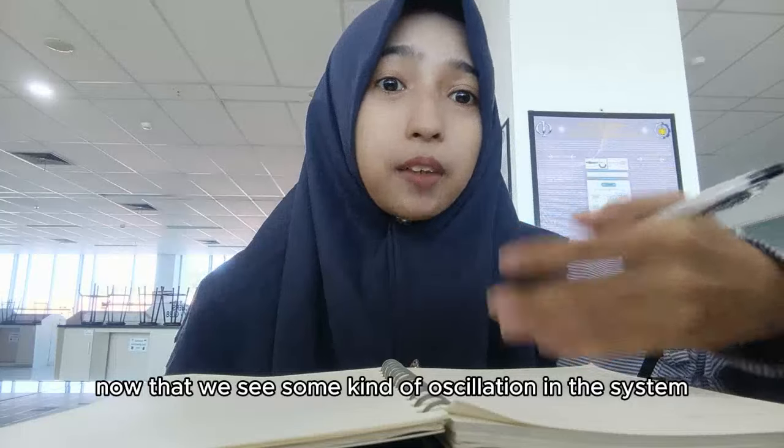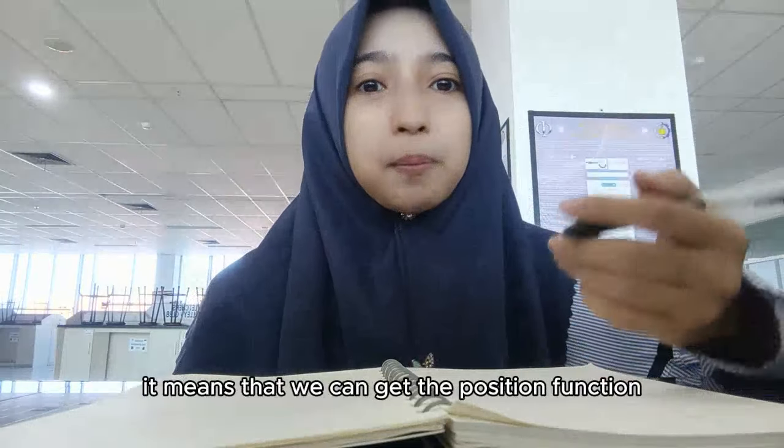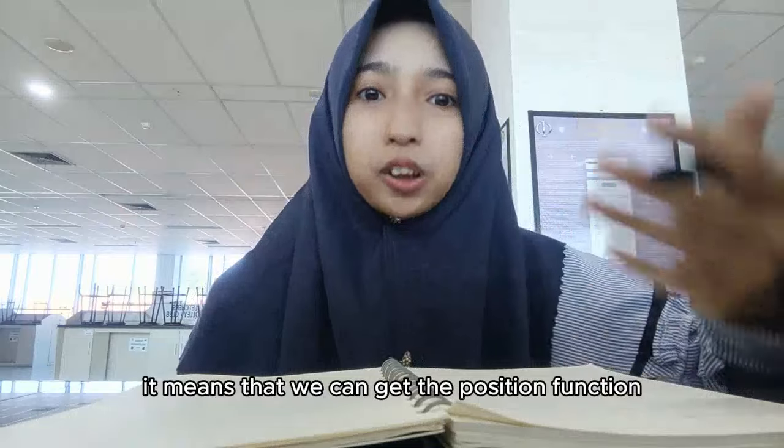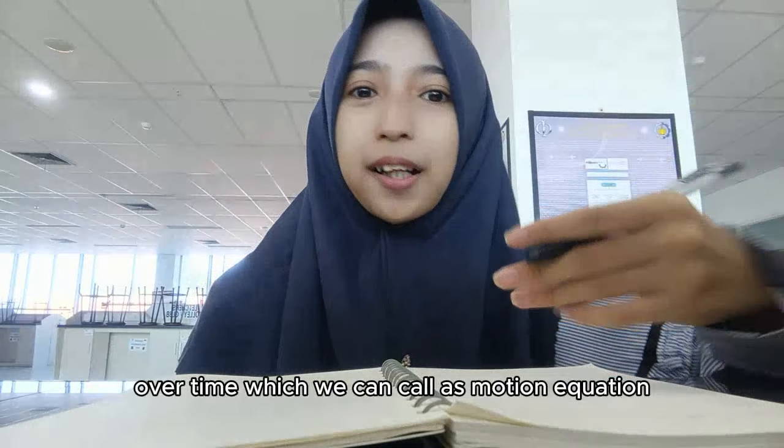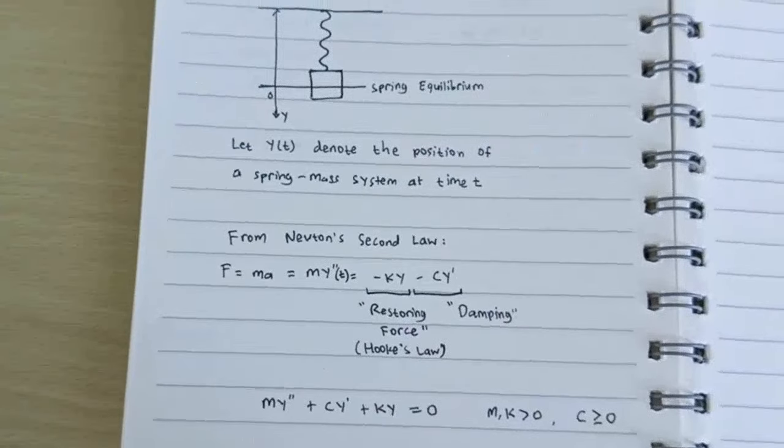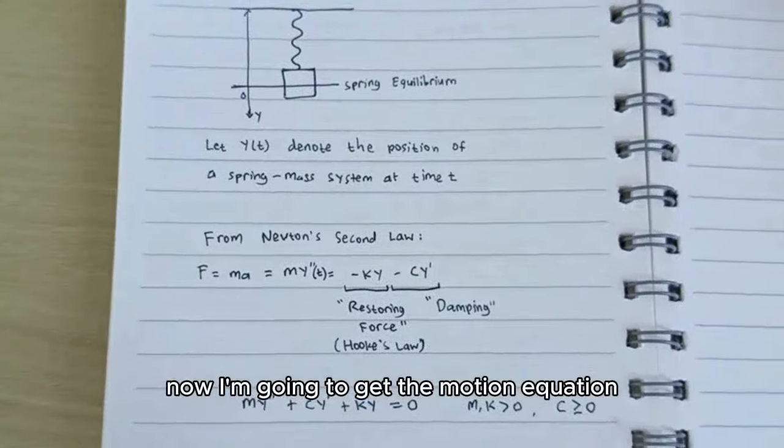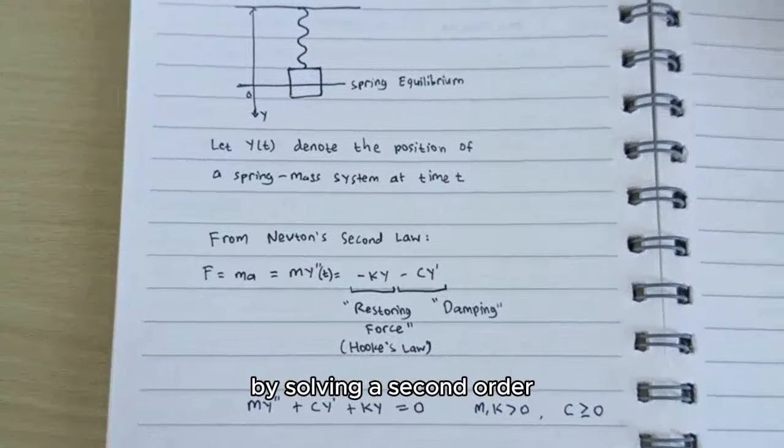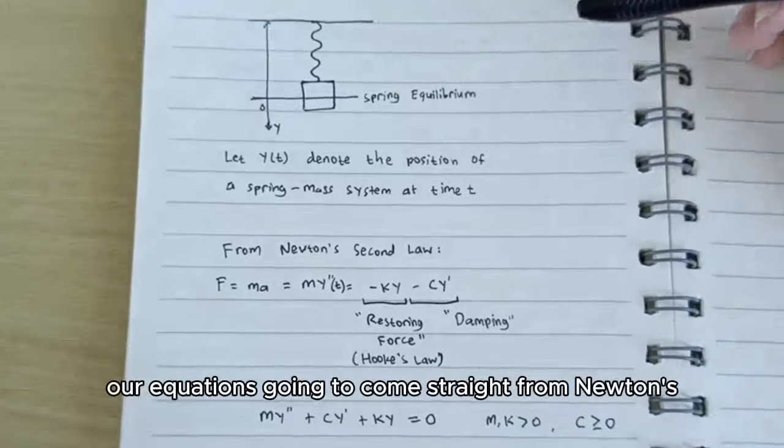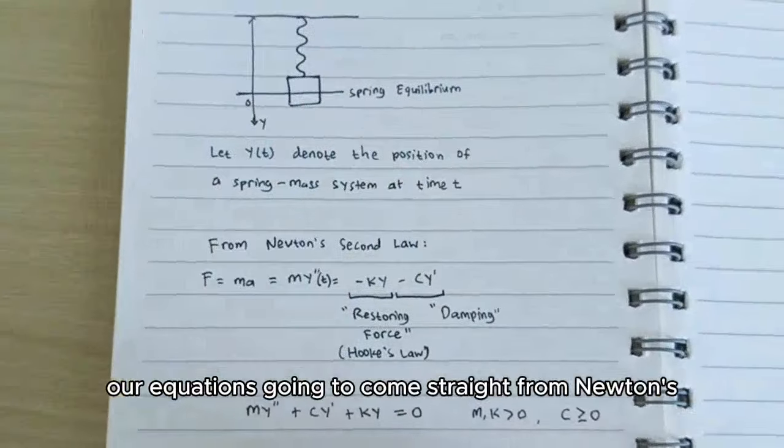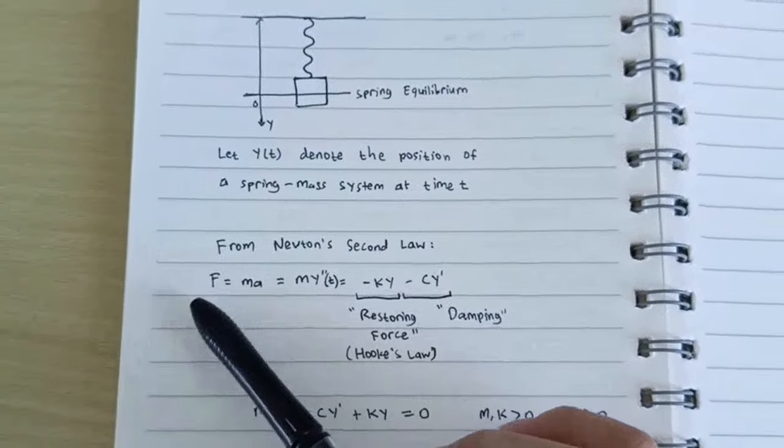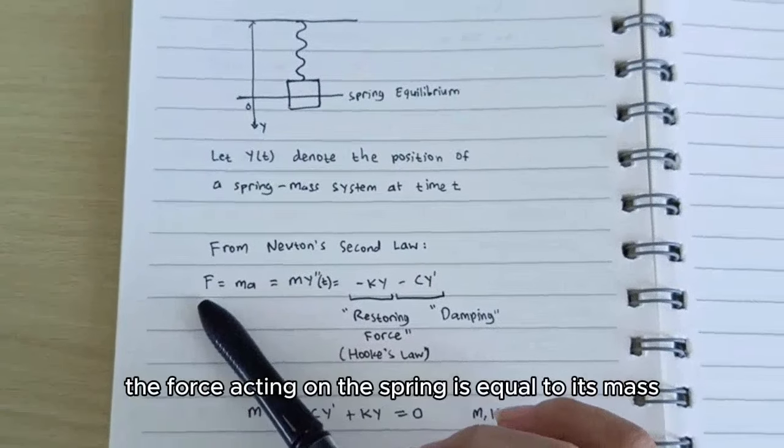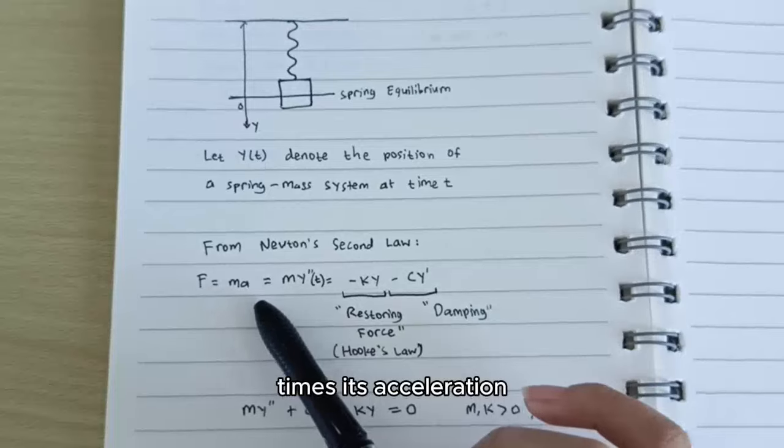Now that we see some kind of oscillation in the system, it means that we can get the position function over time, which we can call as motion equation. Okay, I'm going to get the motion equation by solving a second-order differential equation. Our equation is going to come straight from Newton's second law, which is force. The force acting on the spring is equal to its mass times its acceleration.